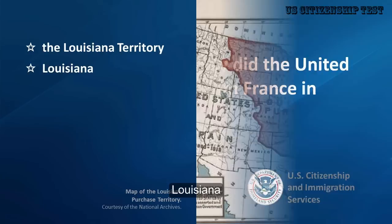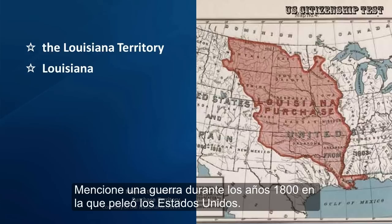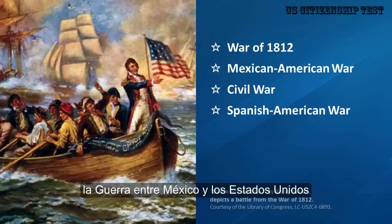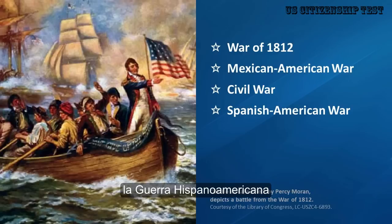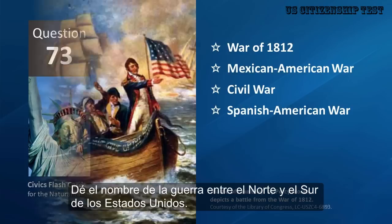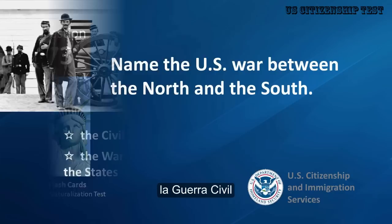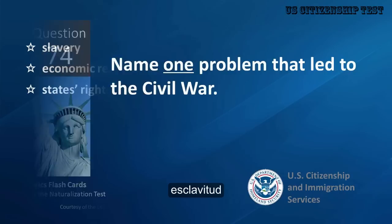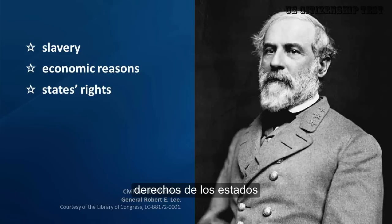What territory did the United States buy from France in 1803? The Louisiana Territory, Louisiana. Name one war fought by the United States in the 1800s. The War of 1812, Mexican-American War, Civil War, Spanish-American War. Name the U.S. war between the North and the South. The Civil War, the War between the States. Name one problem that led to the Civil War. Slavery, economic reasons, states' rights.